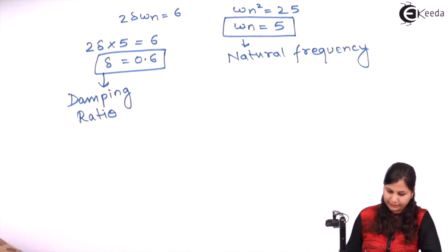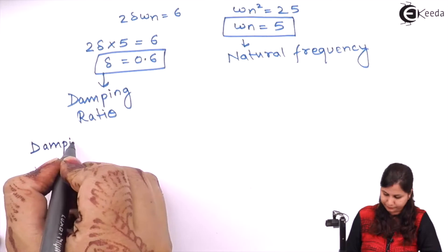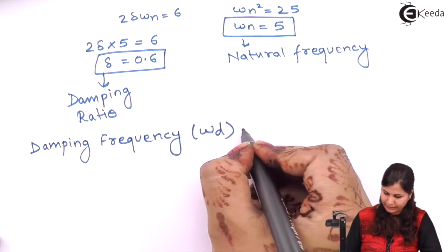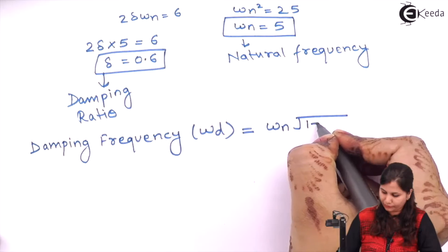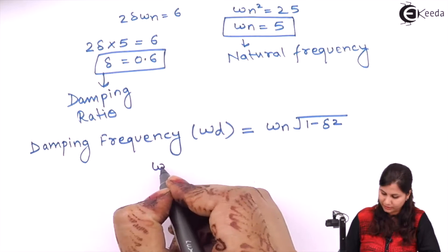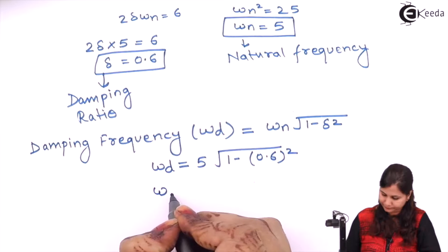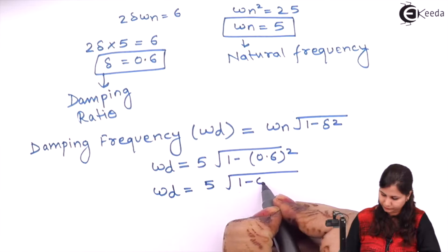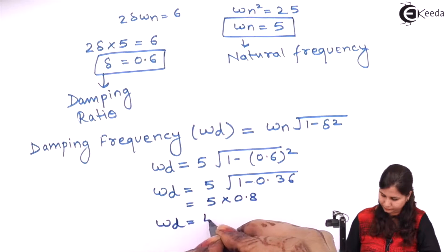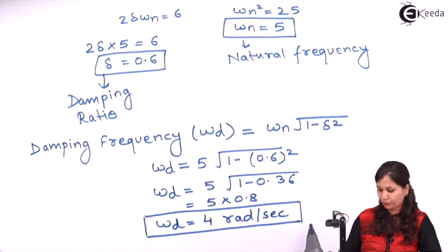Now we calculate the damped frequency ωd, given by ωd = ωn × √(1 − δ²). Substituting ωn = 5 and δ = 0.6: ωd = 5 × √(1 − 0.36) = 5 × √0.64 = 5 × 0.8. The damped frequency ωd = 4 radians per second.